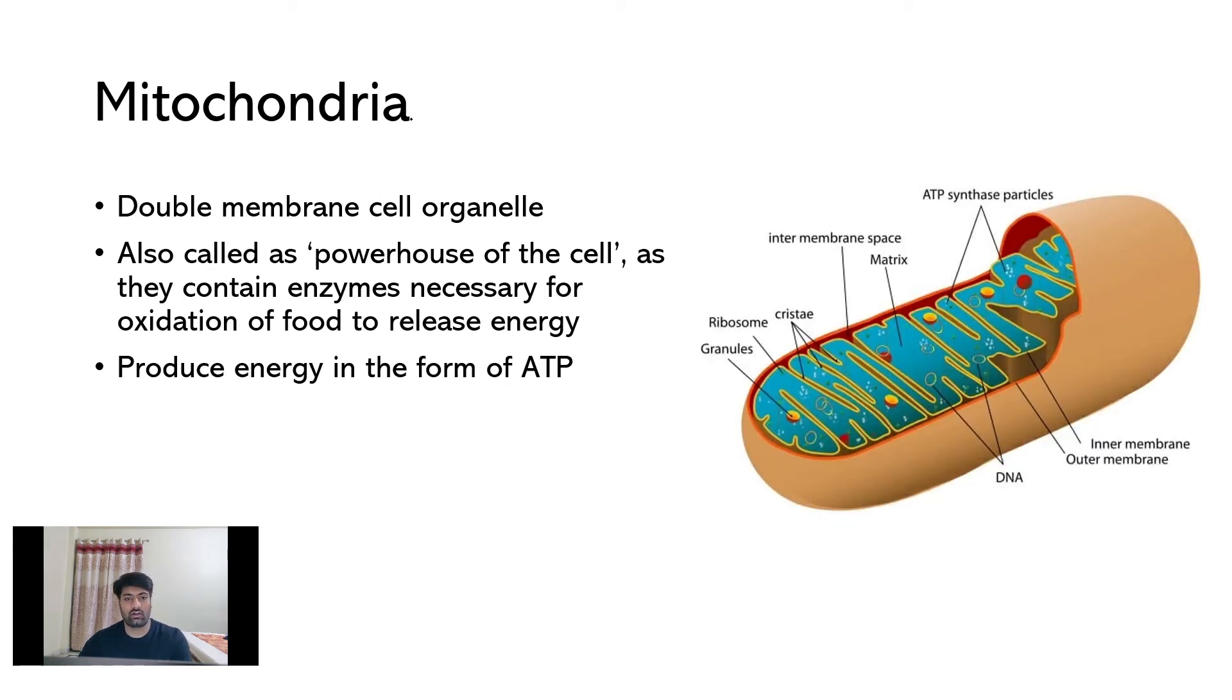Now moving on to one of the major important cell organelles, mitochondria. Mitochondria is a double membrane cell organelle. It has two membranes, outer membrane and inner mitochondrial membrane. The inner mitochondrial membrane is folded up many times to form cristae. This increases the surface area of inner mitochondrial membrane.